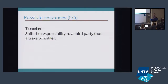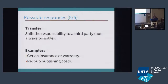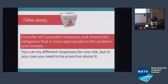The fifth response type is transferring the risk — sometimes you can shift the responsibility to a third party. It costs money, but you can get an insurance thing or recoup some publishing costs. For every risk, don't just blindly say we've got to prevent this risk and do everything we can to stop it. It's about keeping an eye on it and choosing the appropriate response. It's important that you're proactive — so in terms of ignoring the risk, I would call it accepting the risk and keeping a monitor on it.